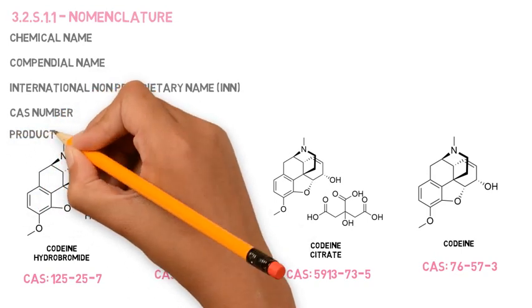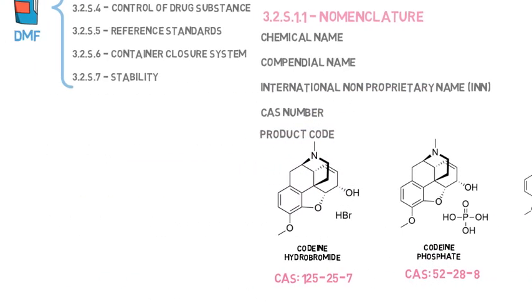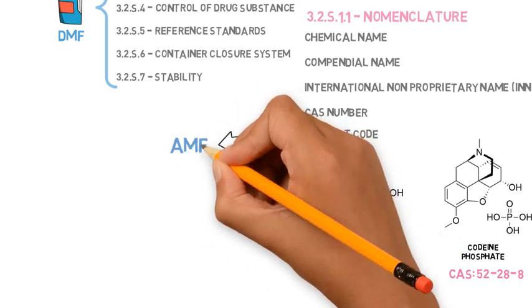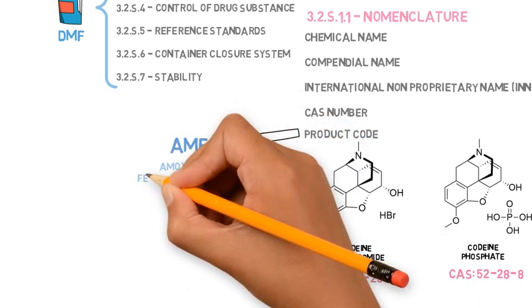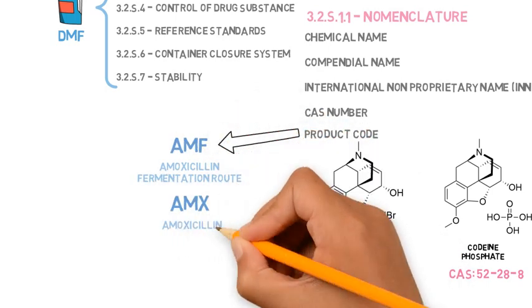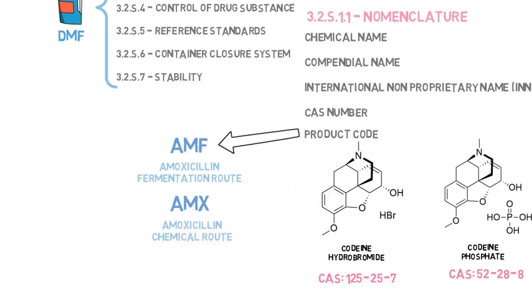Here we may also find the product code, which identifies that API within the company and can be different for different qualities of that API. For example, different polymorphic forms, routes of synthesis, destination market, and so forth.